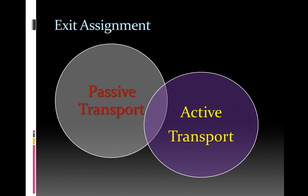So in conclusion here, the exit assignment would be to create a Venn diagram at the end of your notes after you do your summary. And that you include five differences between passive transport and active transport and the three similarities that they share. Thanks, and hopefully this has been helpful for you.